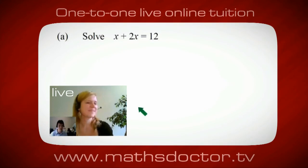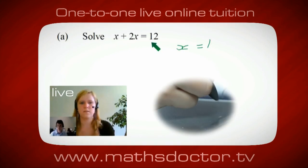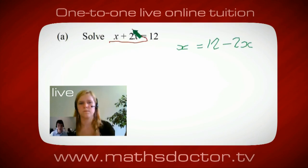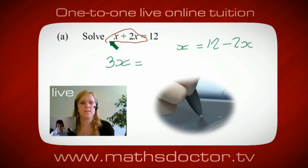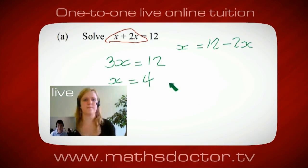Let's solve x plus 2x equals 12. What do you do first? Rather than putting x equals 12 minus 2x, what we want to do first is get all the x's together. We can collect them: 3x equals 12, and so x equals 4.